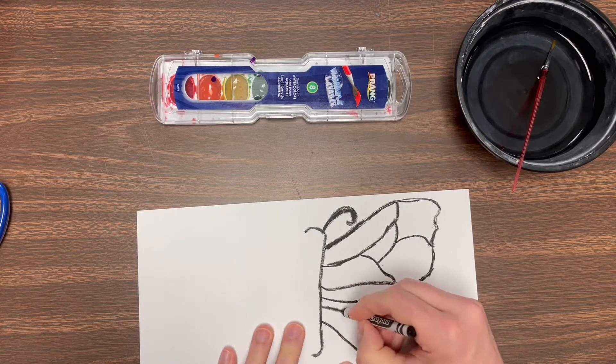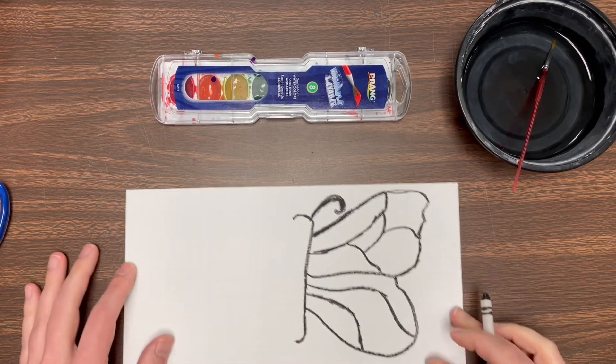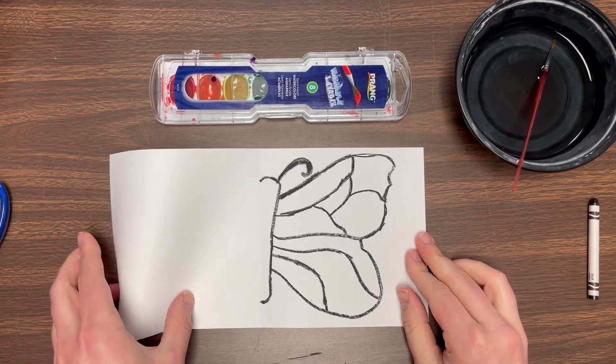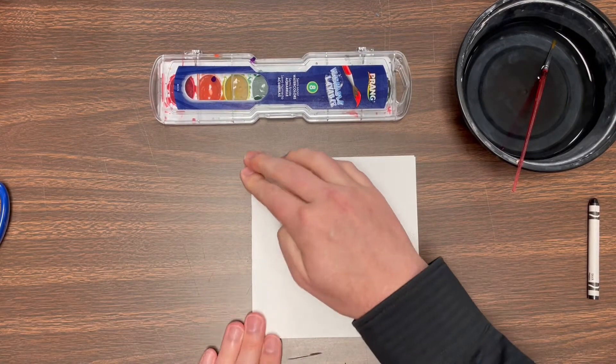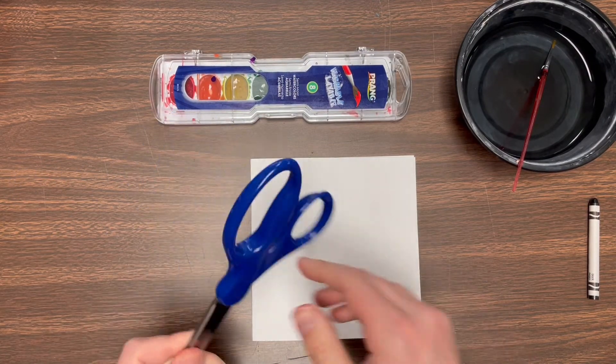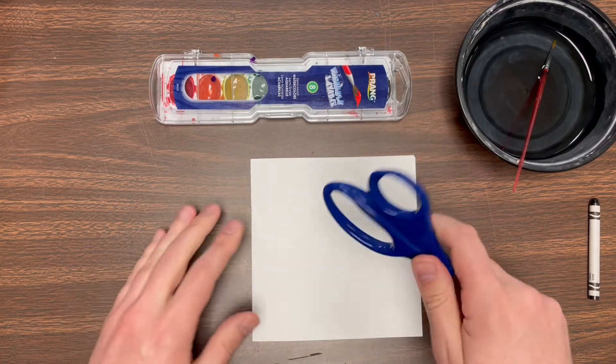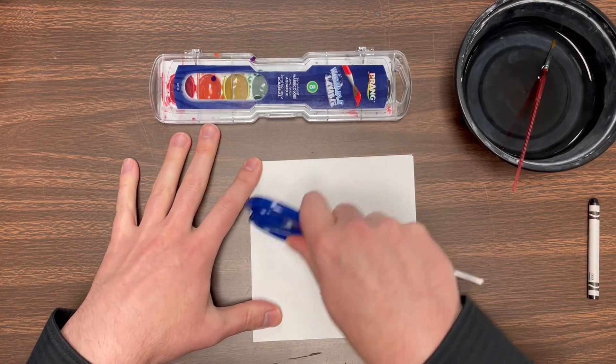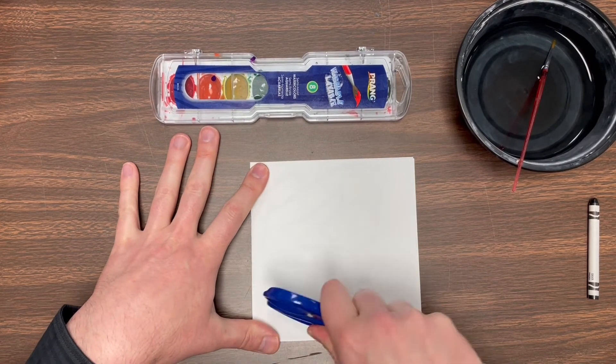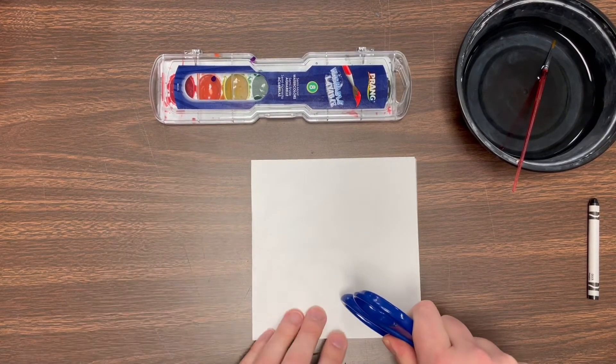After I have finished tracing all of my butterfly, this is when the magic happens. I'm gonna fold my paper up. I'm gonna take some scissors—you could also use a ruler or anything that's really hard. I'm gonna use the handle of my scissors and rub my paper like this all over, especially where the butterfly is.